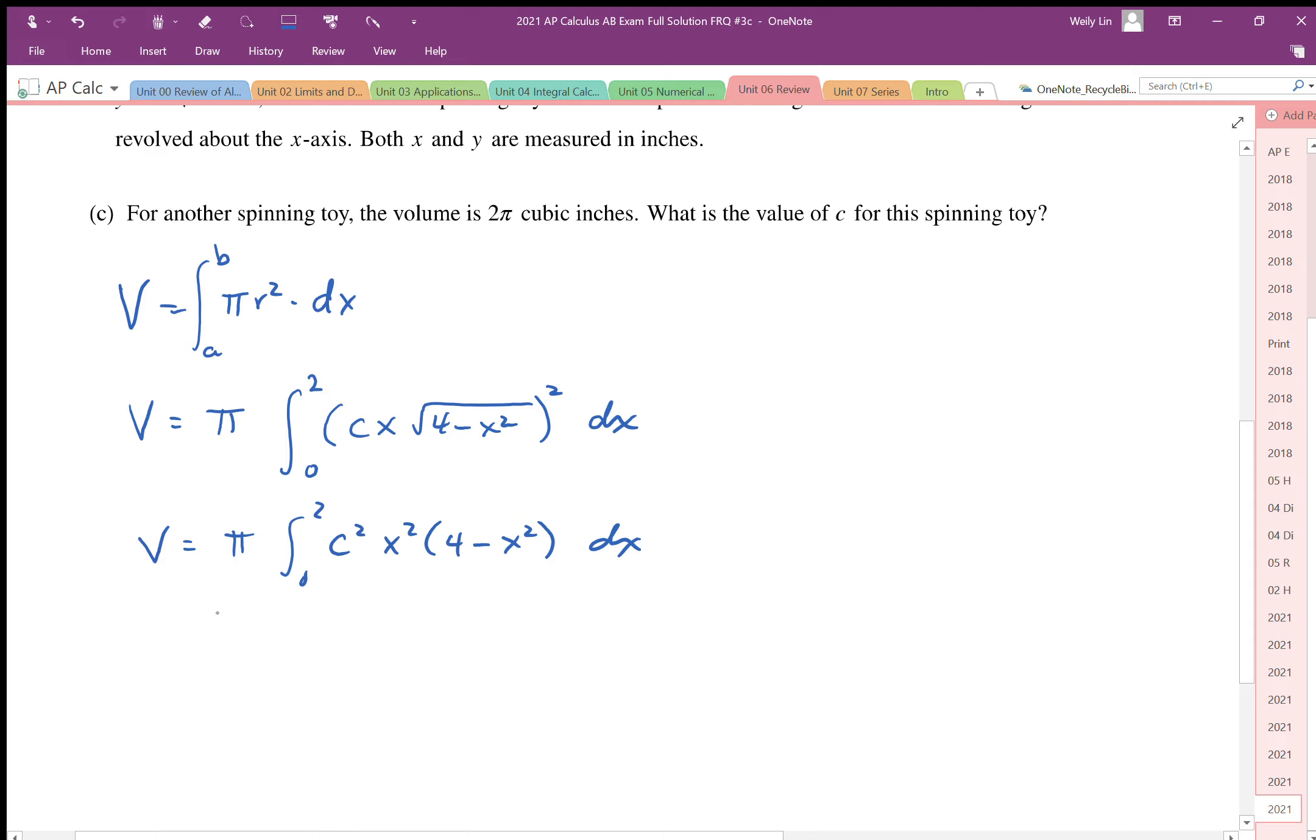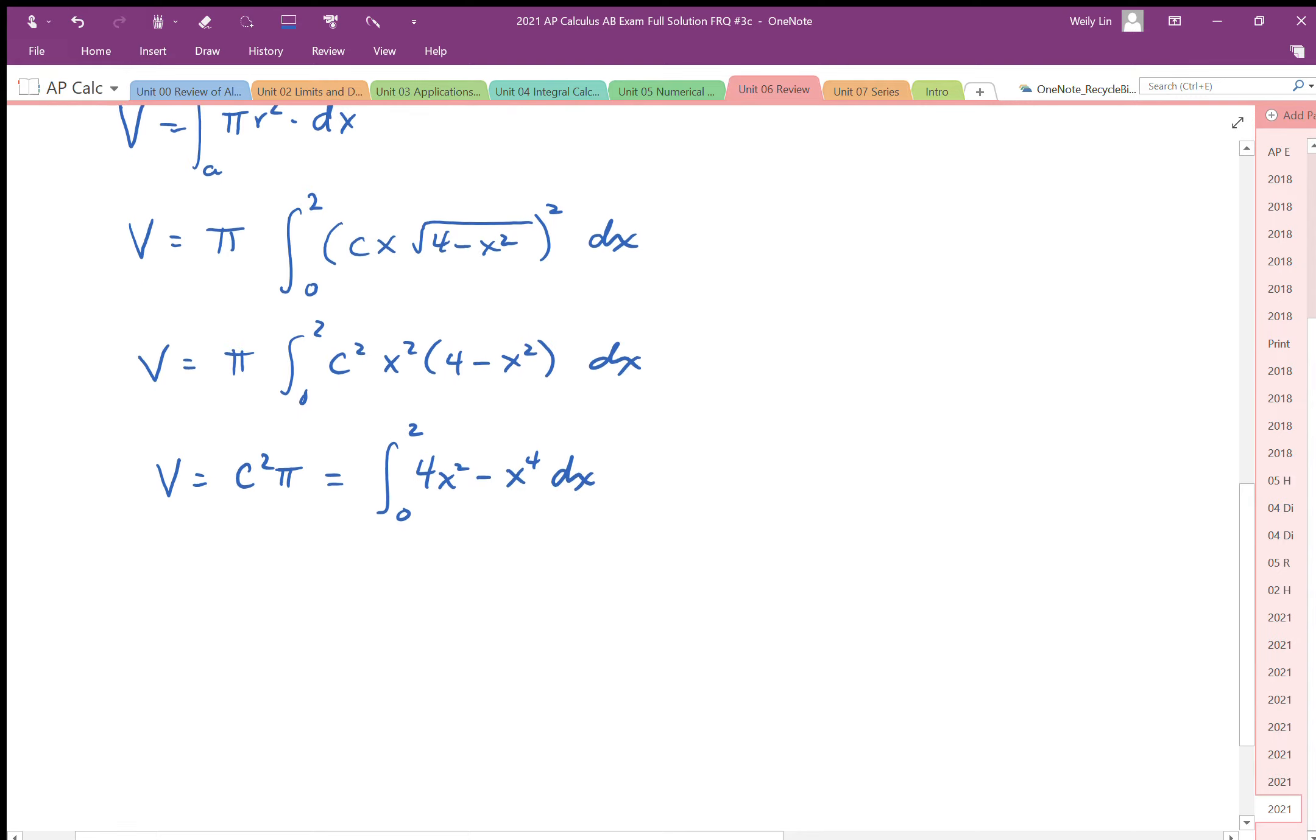I'm going to pull the c outside, so the volume is equal to c²π, and that's going to be the integral from 0 to 2 of 4x² - x⁴ dx. Okay, so then I need to anti-differentiate to work out the volume and figure out what c I can plug in to make it equal to 2π.